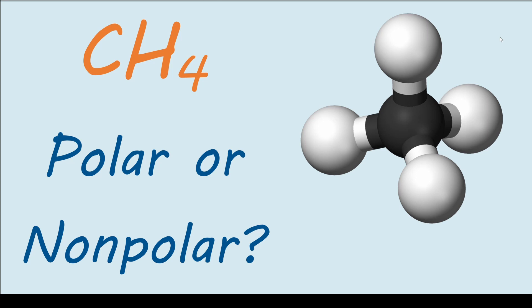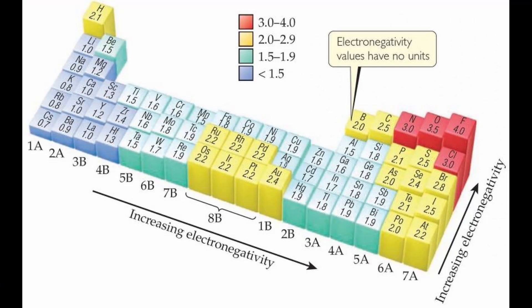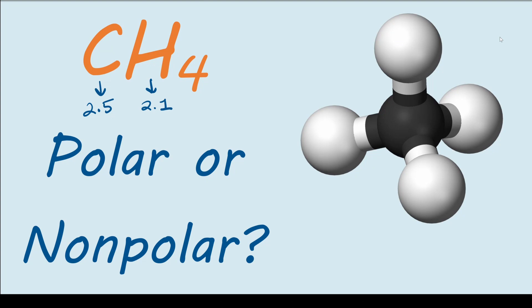To find out if methane is polar or not, let's check out the electronegativity table. We can see that carbon is 2.5 and hydrogen is 2.1. Since the difference between them is 0.4, the covalent bond between them is not polar.